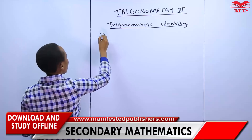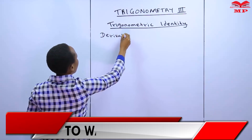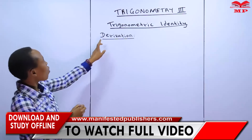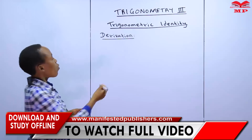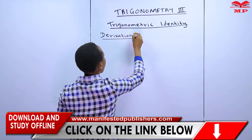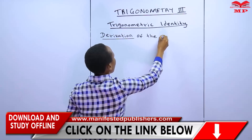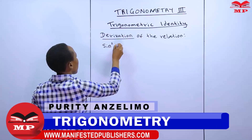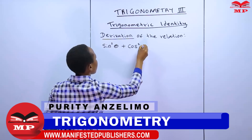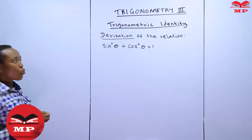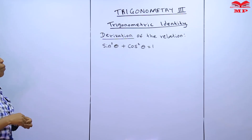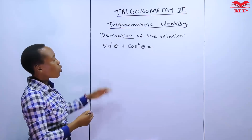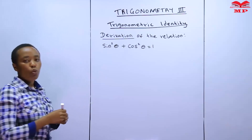So, trigonometric identity. We start with the derivation — specifically, the derivation of the relation sin squared theta plus cos squared theta is equal to 1. We want to derive that. You can be asked to derive it. So before we go to deriving that relation, I want you to note the following.